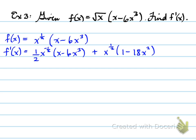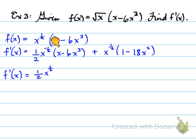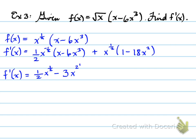Once we expand, we write one half x to the half — that comes from taking one half times x to the negative half times x, adding exponents: negative one half plus one equals positive one half. Then minus six over two, which becomes 3, times x to the two and a half — from negative one half plus three equals two and a half. You can never leave a mixed fraction, so convert two and a half to five over two.